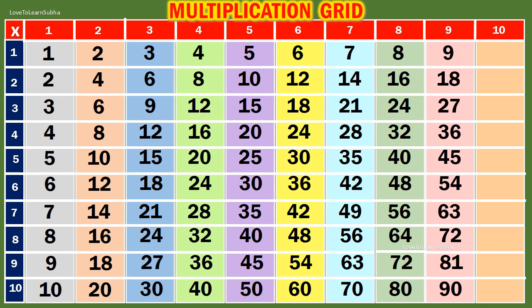Table of 10. 10 ones are 10. 10 twos are 20. 10 threes are 30. 10 fours are 40. 10 fives are 50.